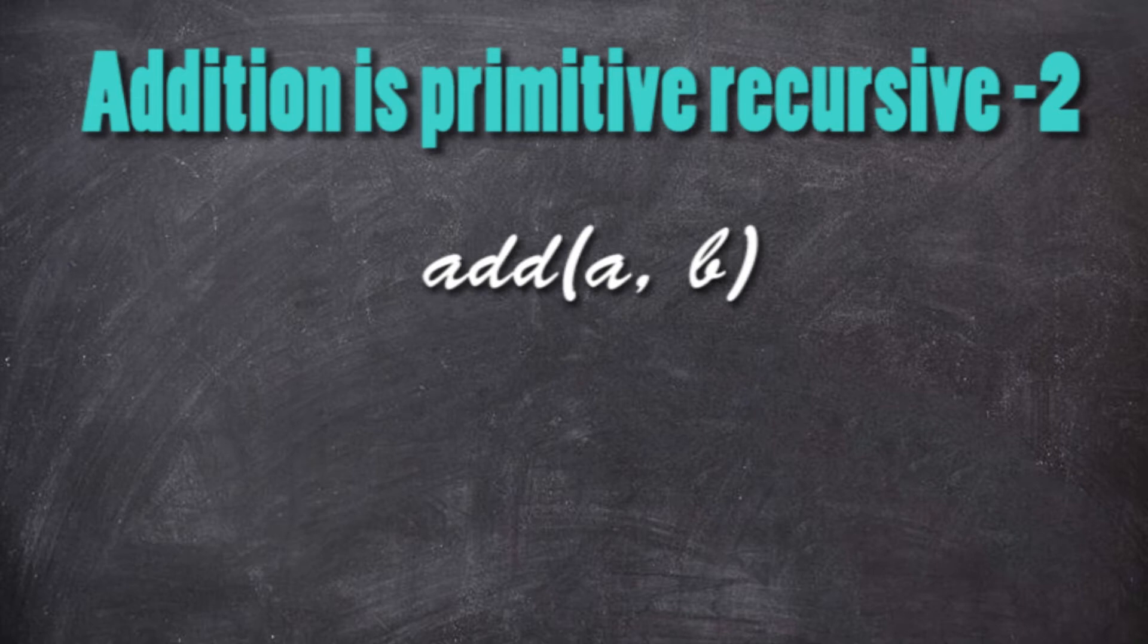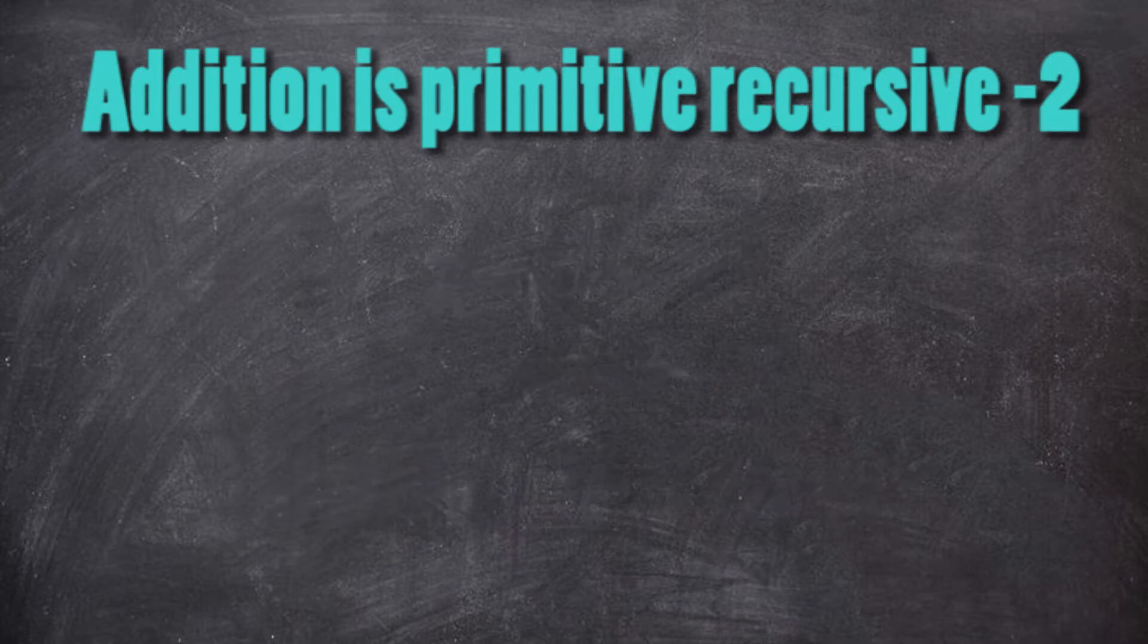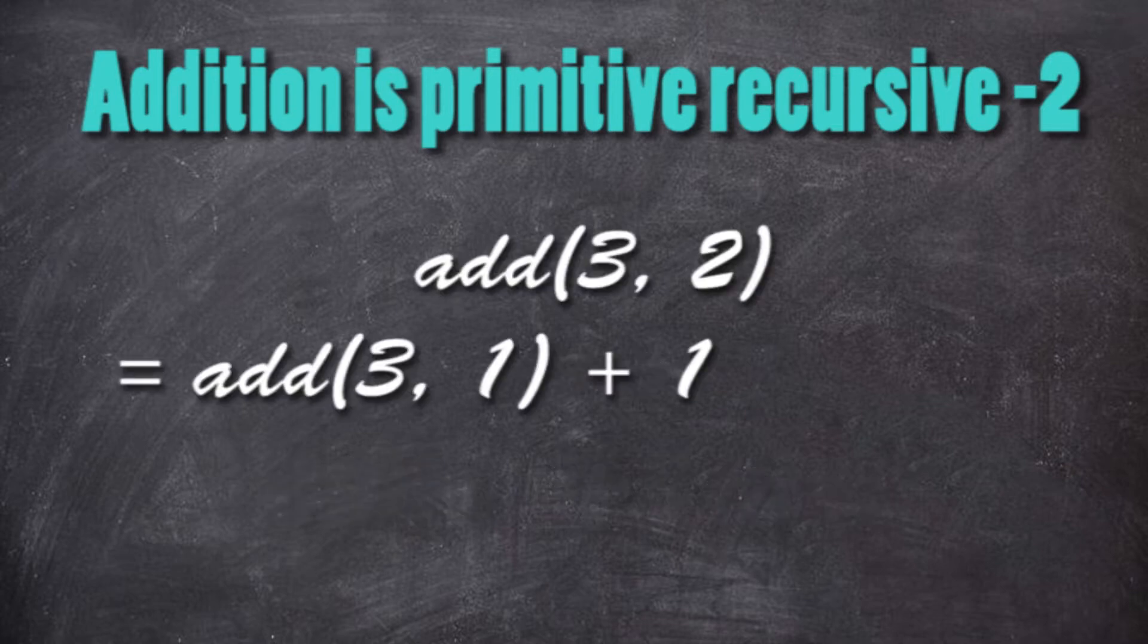To add a number B to a number A is similar to add B times 1 to the number A. For example, the addition of 3 and 2 is also equal to the addition of 3 and 1 plus 1.